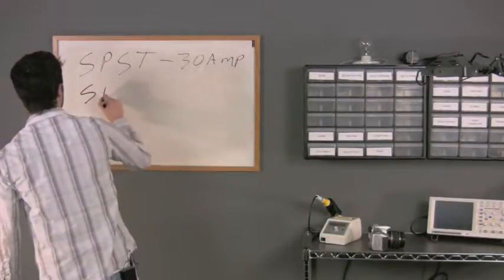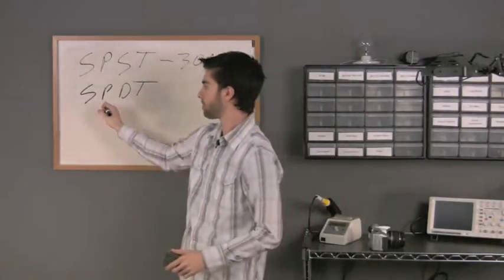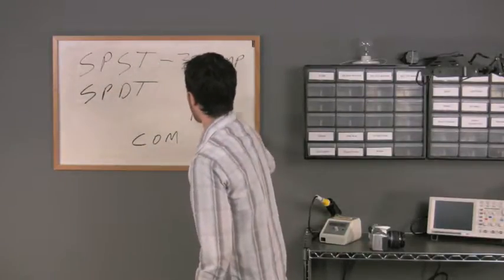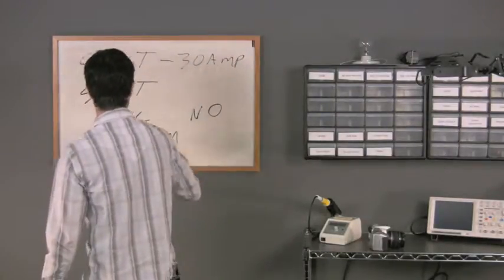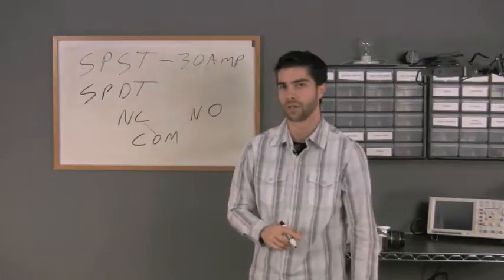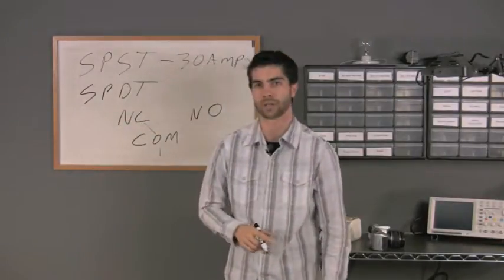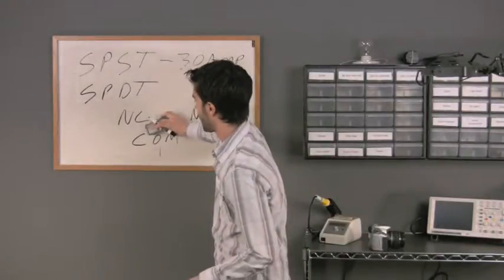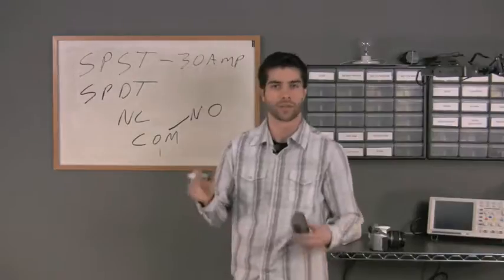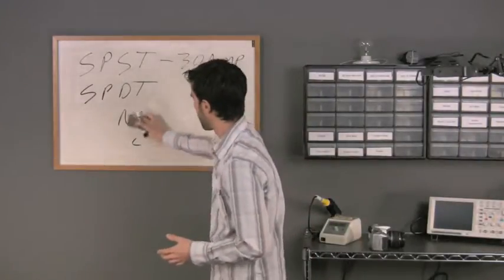A single-pole, double-throw relay basically works the same way. However, a single-pole, double-throw relay has one input and two outputs. Your input is still the common. You still have the normally open output, but now you also have the normally closed output. When the relay is off or de-energized, the common is connected to the normally closed. By default, if the relay is off and I had my power fed into the common, I would have power on the normally closed pin. If I turn the relay on, the common is going to connect to the normally open. There's an actual actuator arm in there that moves back and forth between these two, moved by an electromagnet. That is basically how a relay works.